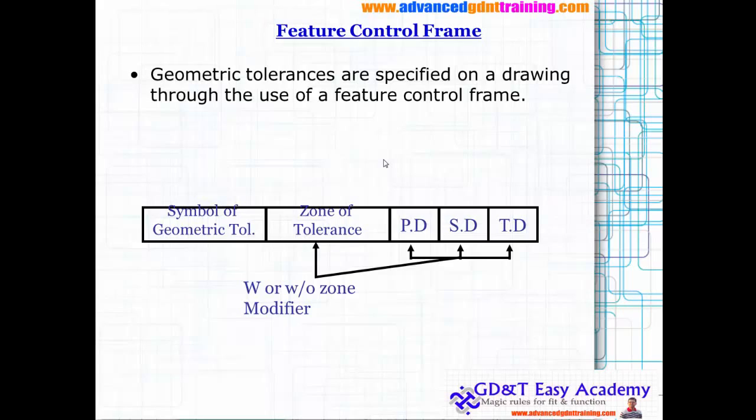It has five different zones: the symbol of the geometric tolerance, the tolerance zone with its particular dimension, and the zone of the tolerance. This is the tolerance zone for your modifiers like MMC or LMC for particular values.